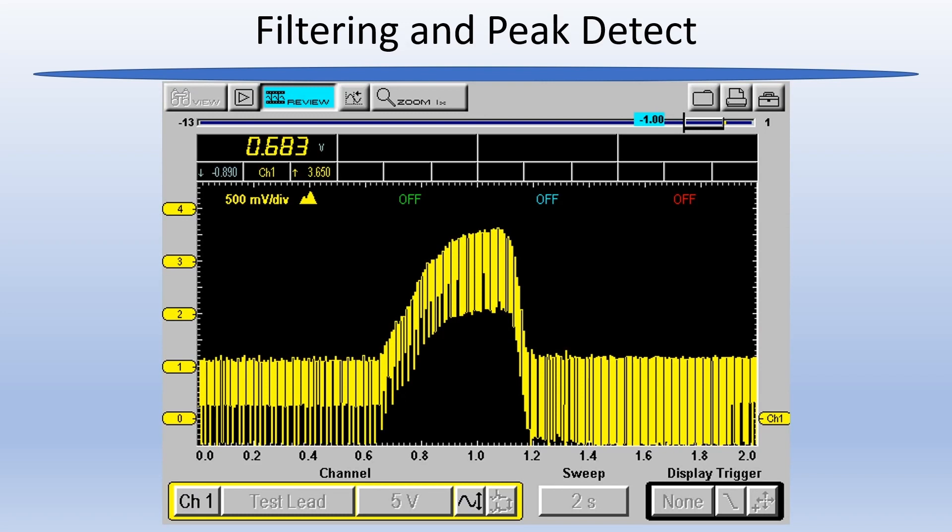Let's start with filtering. Before I get into this, understand that some scopes, including Snap-on, will have some filtering built-in by default. So even if you don't have filter selected, you will be seeing a more filtered pattern than you would on some other scopes like the Pico.